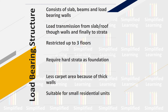You can have only three floors in a load bearing structure, which is in contradiction with frame structure where you can have any number of floors. The foundation requirement for load bearing structure is that it requires a hard strata as foundation. Another disadvantage is that the total carpet area provided is very less because most of the building's area is covered by thick walls. Load bearing structure is suitable for small residential one or two room units.